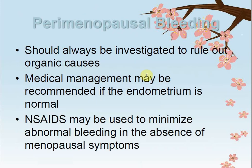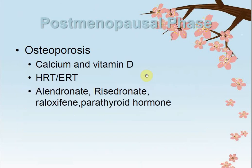Pre-menopausal bleeding should always be investigated to rule out organic causes. Medical management may be recommended if the endometrium is normal — if no changes are found in the endometrium, medical management is suitable. Non-steroidal anti-inflammatory drugs (NSAIDs) are used to minimize bleeding in the absence of menopausal symptoms. After one year without a period, any bleeding that occurs may indicate endometritis or a vaginal inflammatory process in the post-menopausal phase.